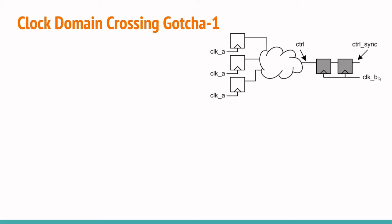You have two clock domains, clock domain A and clock domain B. There's a control signal that needs to be sent from clock domain A across to clock domain B. Remember, this control signal is generated and is an output of a combinatorial cloud of logic.